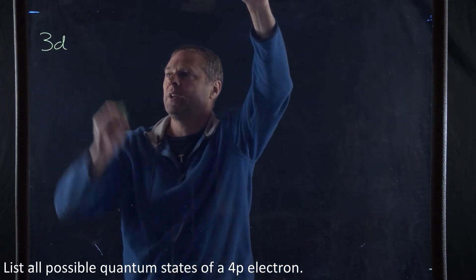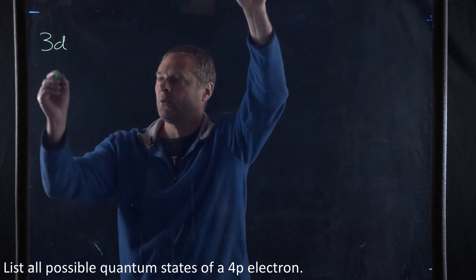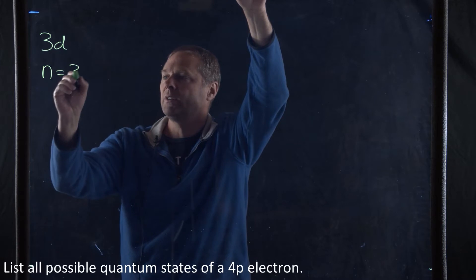So we have a 3d electron. What this tells us is, once again, the 3 tells us that the principal quantum number n is 3.